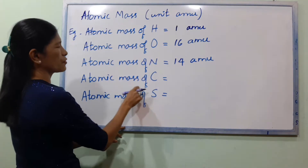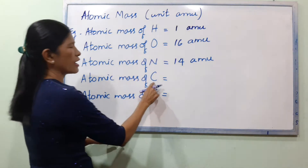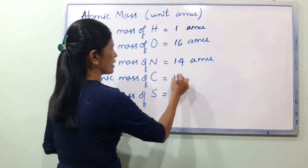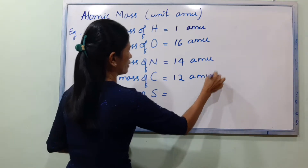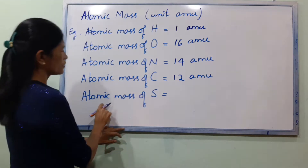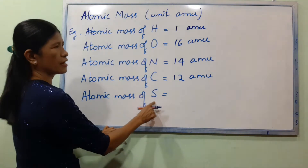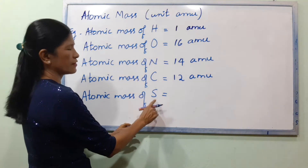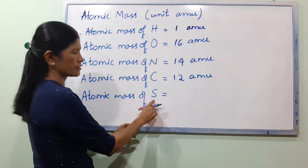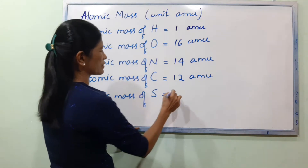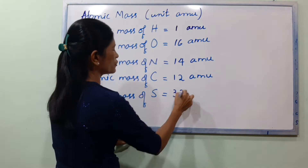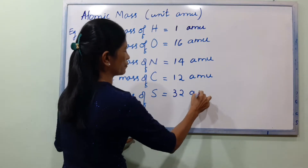The atomic mass of carbon is 12 AMU. The atomic mass of sulfur — the symbol for sulfur is S. The atomic mass of sulfur is 32 AMU.